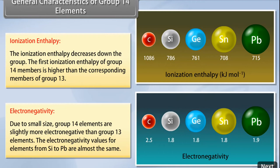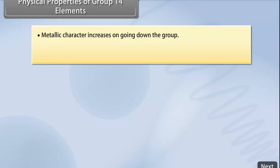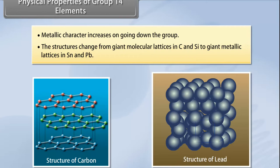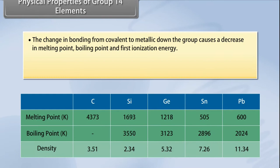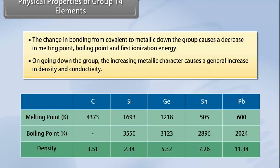Physical properties of group 14 elements: Metallic character increases on going down the group. Structures change from giant molecular lattices in carbon and silicon to giant metallic lattices in tin and lead. The change in bonding from covalent to metallic causes a decrease in melting point, boiling point, and first ionization energy. Increasing metallic character causes a general increase in density and conductivity.